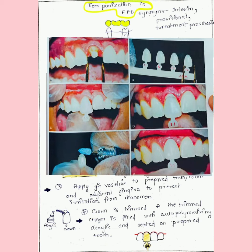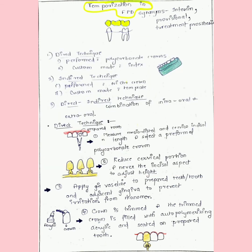We apply vaseline to the adjacent areas and gingiva to prevent irritation from the monomer. The selected or preformed crown is trimmed, and the trimmed crown is filled with auto-polymerizing acrylic and then seated on the prepared tooth. We get those crowns and just have to trim them from the cervical portion and fix them.